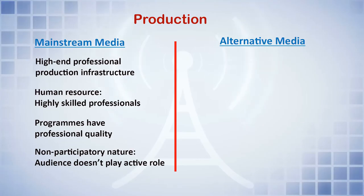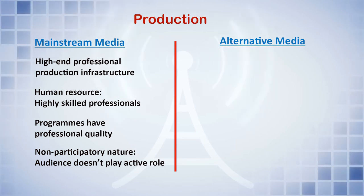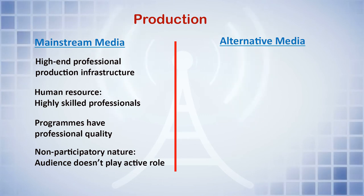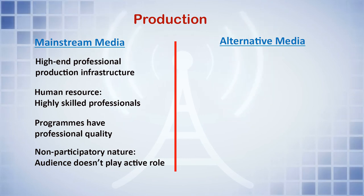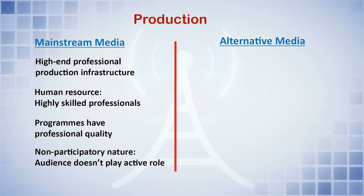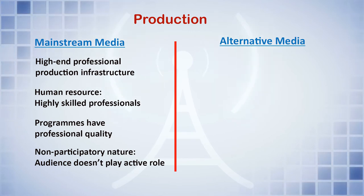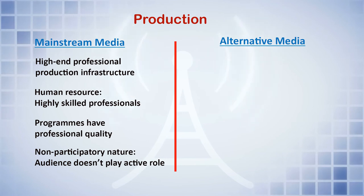Now, production is also a very important aspect. In mainstream media, there is high-end professional production infrastructure with highly skilled professionals. Programs have professional production quality. This is natural because they have high-end professional production infrastructure and highly skilled human resources as cameramen, editors, anchors, reporters, producers, and engineers.